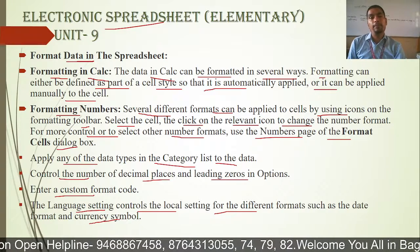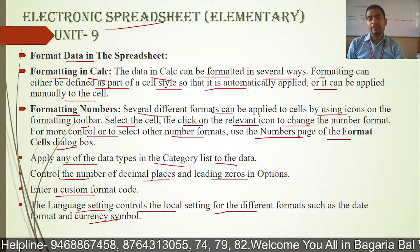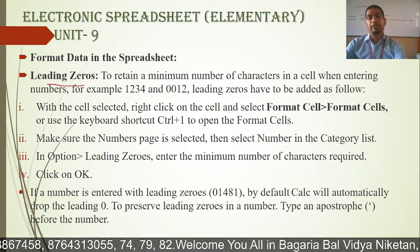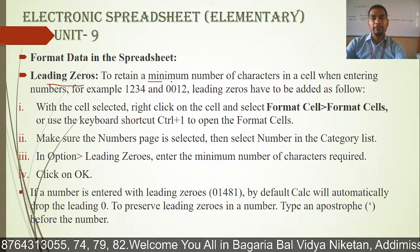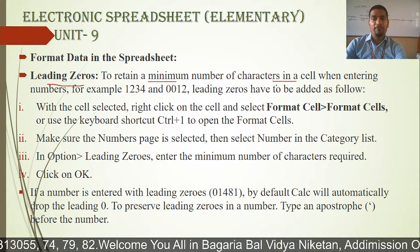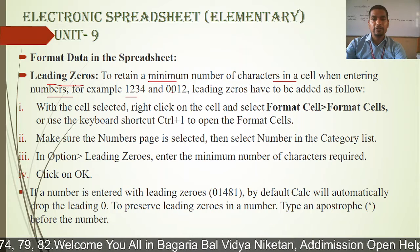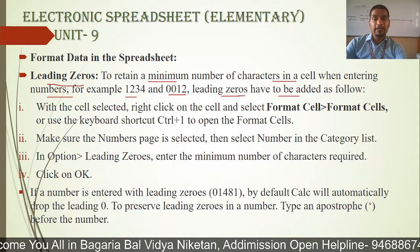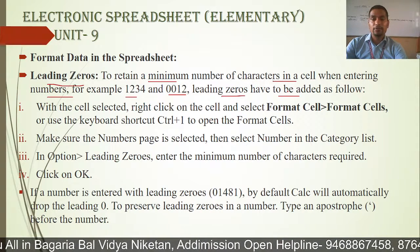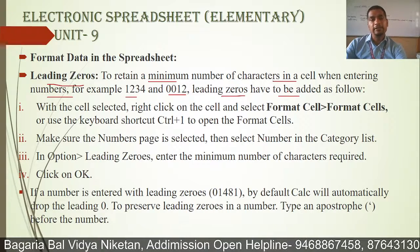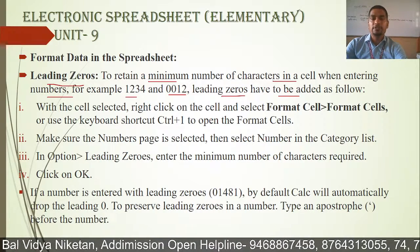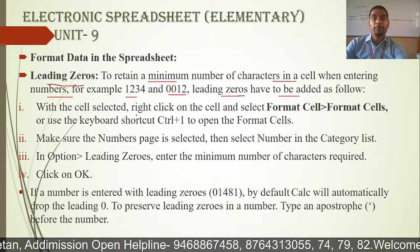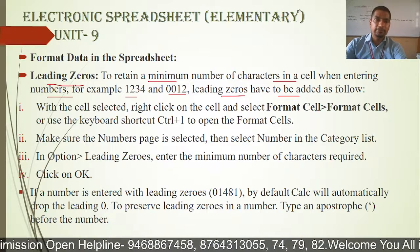There is some formatting that we will apply in KLC or the spreadsheet program. First, we apply leading zero. To retain a minimum number of characters in the cell when entering numbers — for example, 1234 and 0012 — leading zeros have to be added. Now if you have to write a number in your cell and you use zero at the beginning, it will be skipped by default.